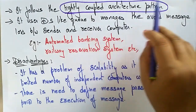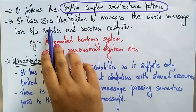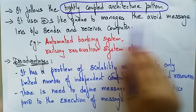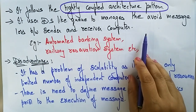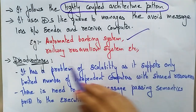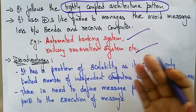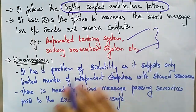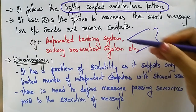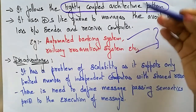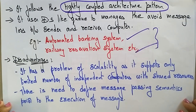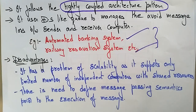The distributed operating system uses distributed systems like a queue to manage and avoid message loss between the sender and receiver computer. Examples of systems using this are the automated banking system and the railway reservation system.